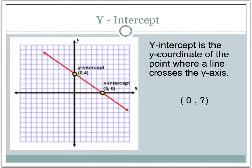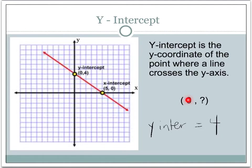Now similarly, the y-intercept is the y-coordinate of the point where a line crosses the y-axis. So we find our red line and find where the line crosses the y-axis. It crosses it right here, so the y-intercept is equal to 4. As you can see in a y-intercept, it's always going to have 0 as the x-part, and then some number would be your y-part. So for x-intercepts and y-intercepts, 0 will always be one of the coordinates of the points.